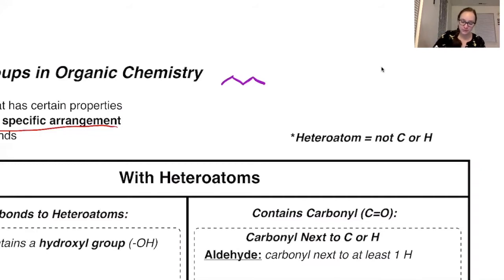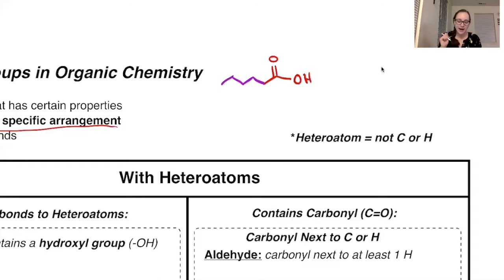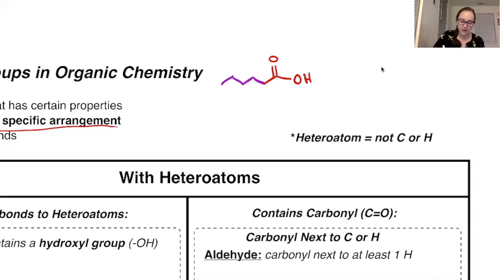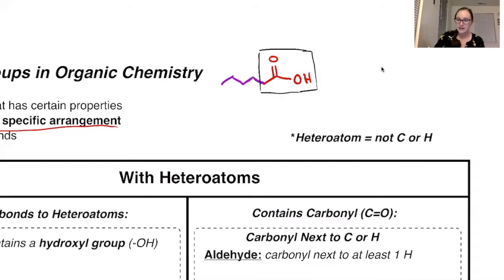Those specific groups you add on to make a molecule more reactive, more polar — those are called functional groups. For example, I could add onto a molecule a carbon double-bonded to an oxygen, where that carbon is also connected to an OH group. That portion is the functional group — the reactive part of the molecule.